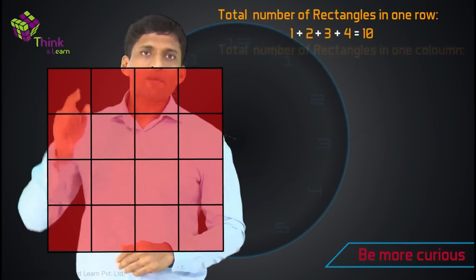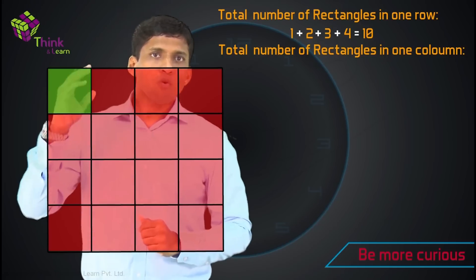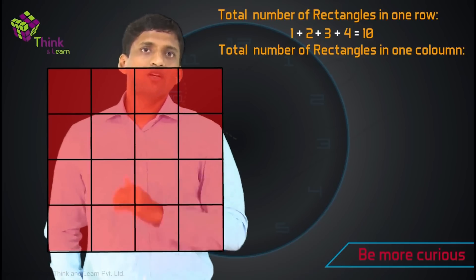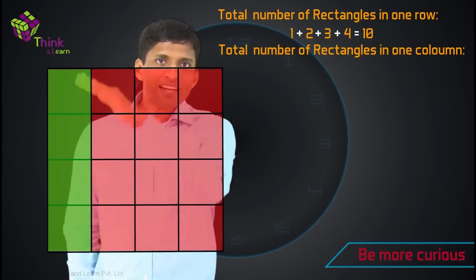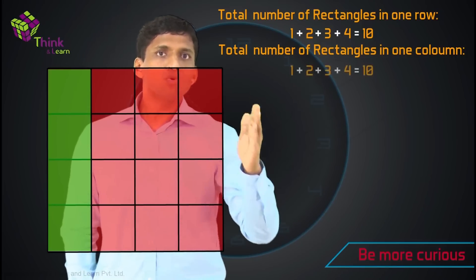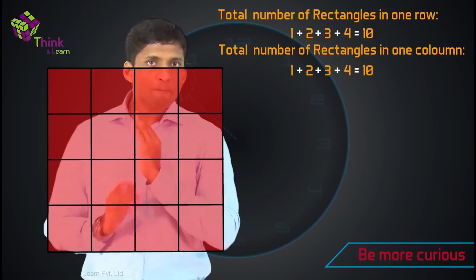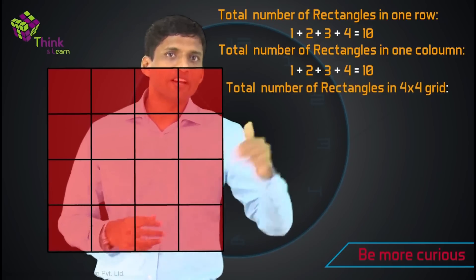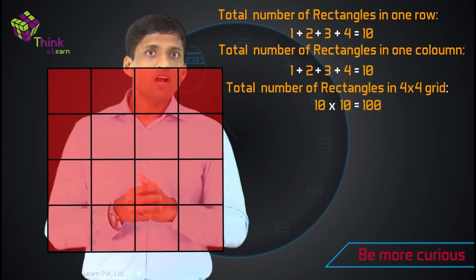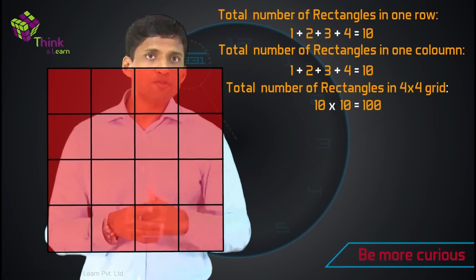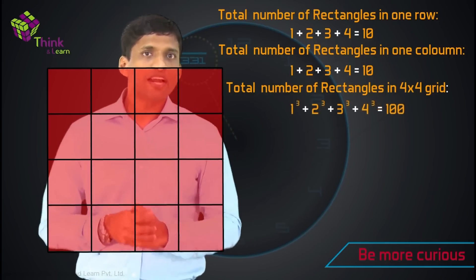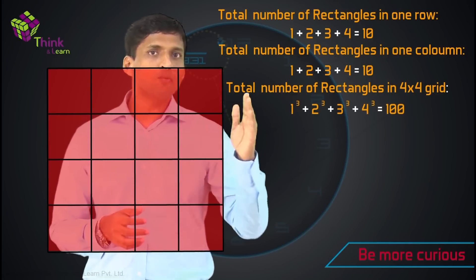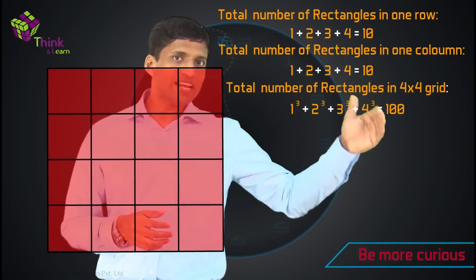Similarly, in the first column: 1 by 1 will be 1, 2, 3, 4. 1 by 2 will be 1, 2, 3. 1 by 3 will be 1 and 2. And 1 by 4 will be just 1. So the total number of rectangles along this column also will be 1 plus 2 plus 3 plus 4 which is 10. Now in the complete 4 by 4 grid, total number of rectangles will become 10 into 10, which is 100, or 10 squared equal to 100. This can also be written as the sum of the first 4 perfect cubes: 1 cube plus 2 cube plus 3 cube plus 4 cube. So the sum of all cubes up to 4 cube can also be written as 10 squared equal to 100.